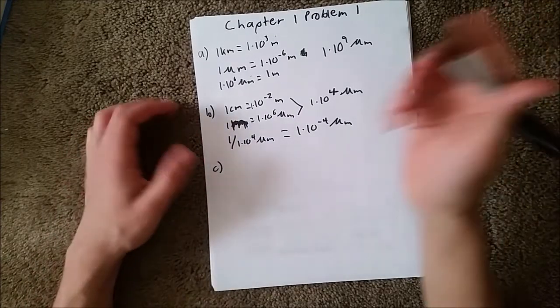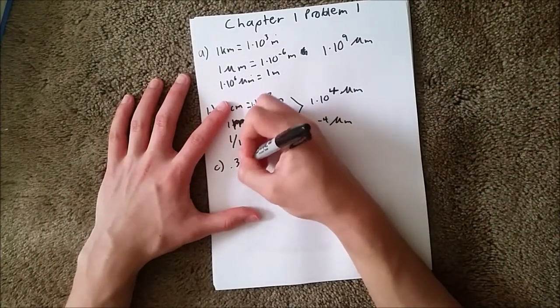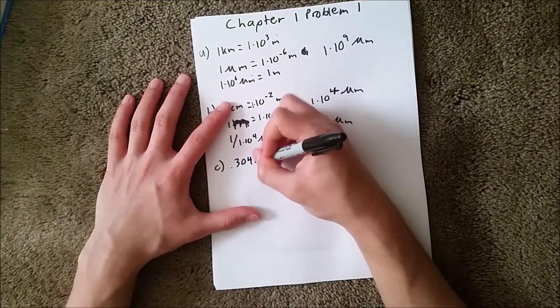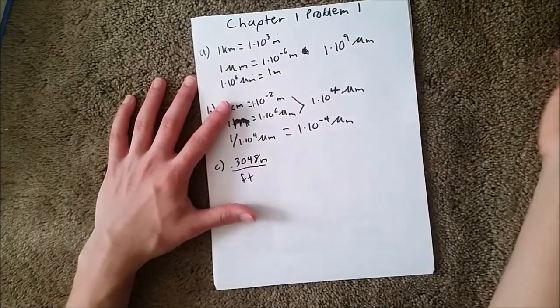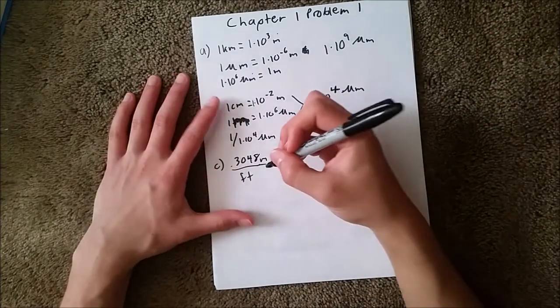which is not just a simple number, there's 0.3048 meters in one foot. And we know that there's three feet in one yard.